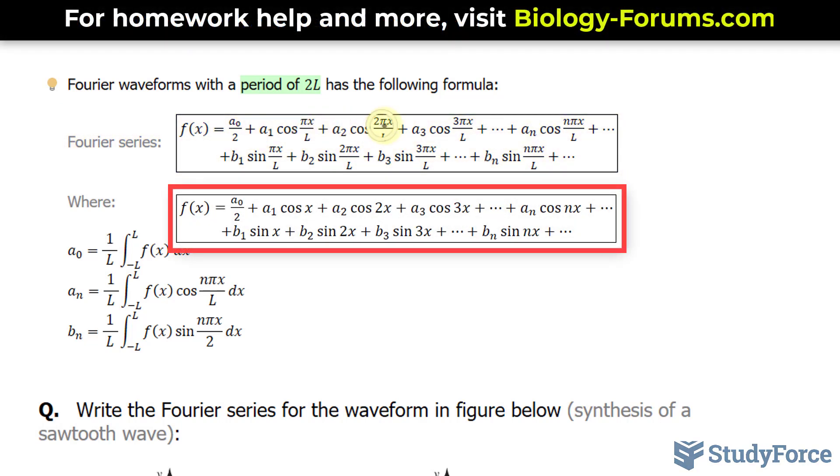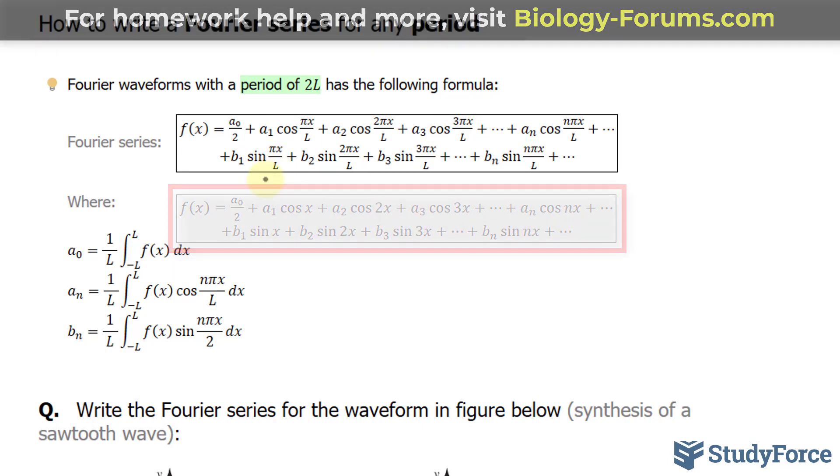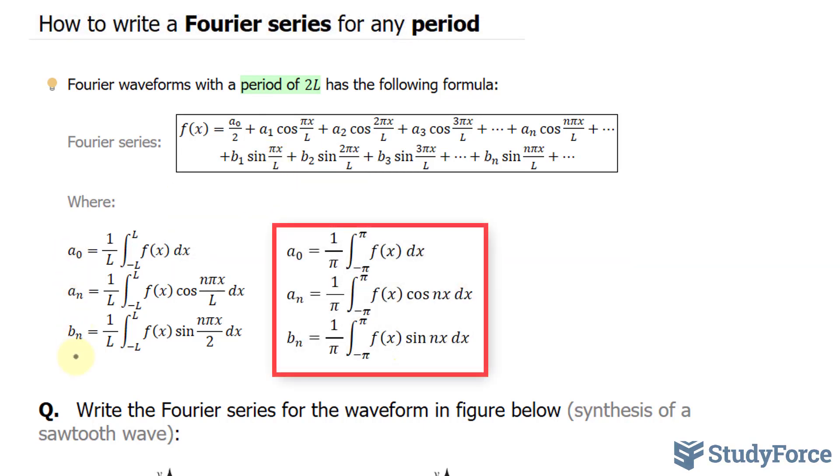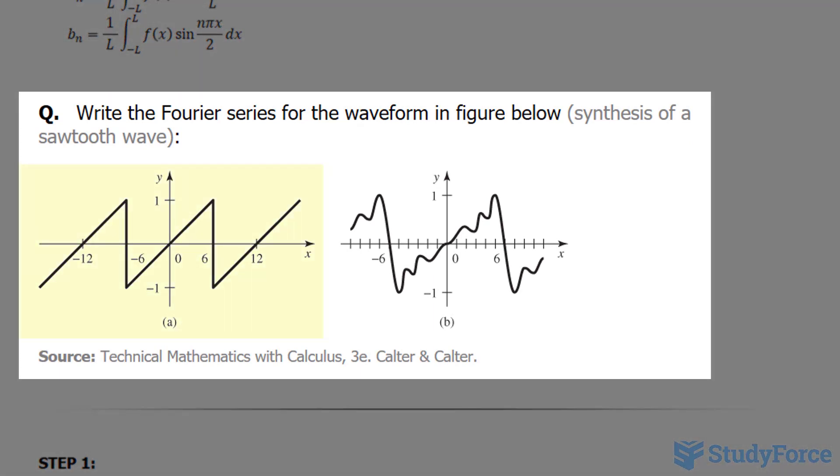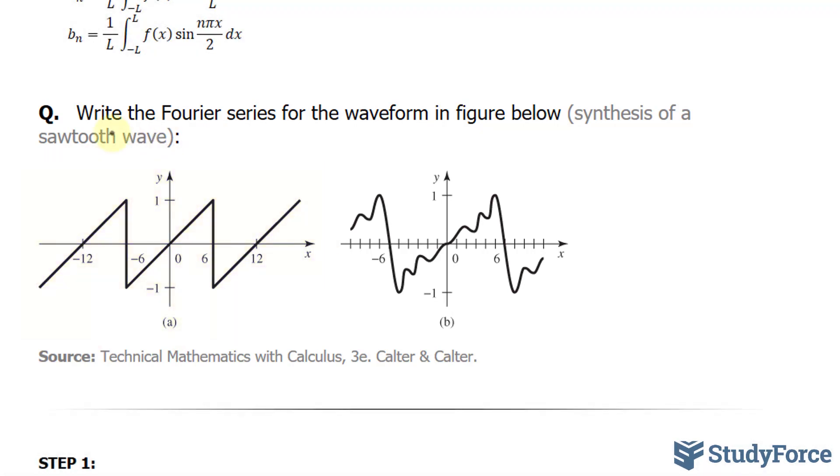Notice that these parts of the trigonometric functions are modified with an L. In addition, a sub 0, a sub n, and b sub n are modified to look like this. The question here asks, write the Fourier series for the waveform in the figure shown below. So we want to come up with an equation that represents the following. Let's go ahead and do this.